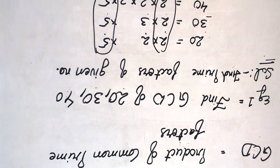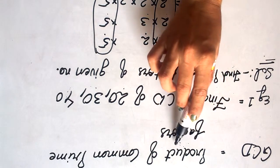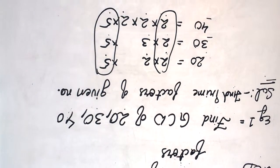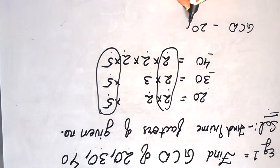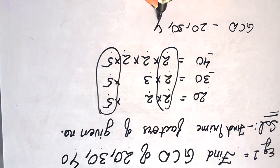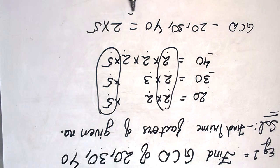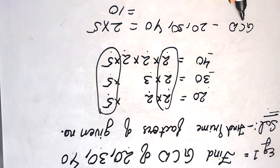And as we told above, GCD is product of common prime factors. So GCD for 20, 30, and 40 is equal to 2 × 5 which is 10. So GCD for 20, 30, and 40 is 10.